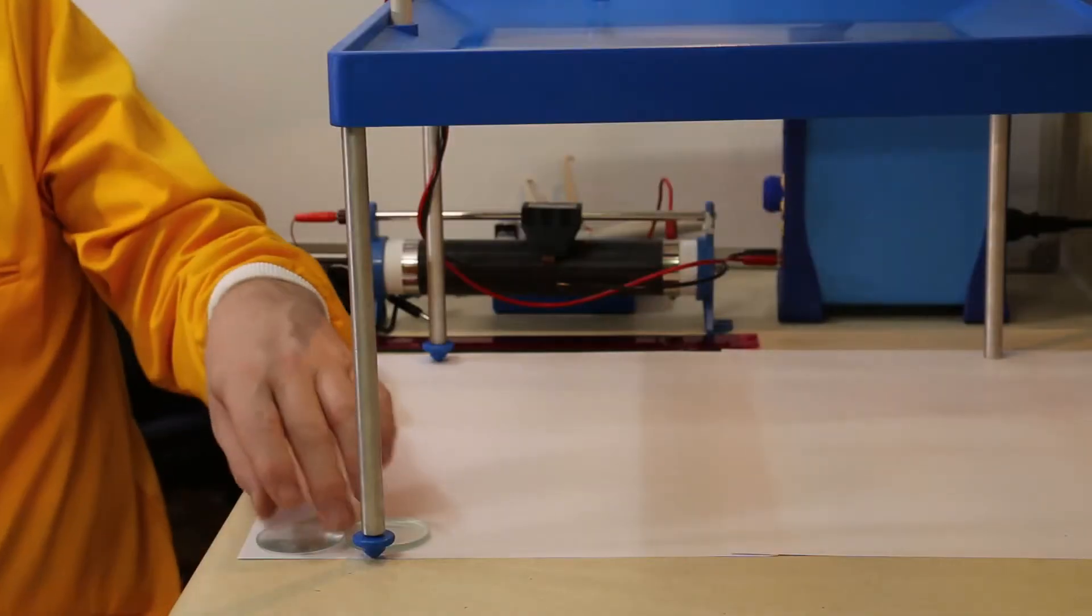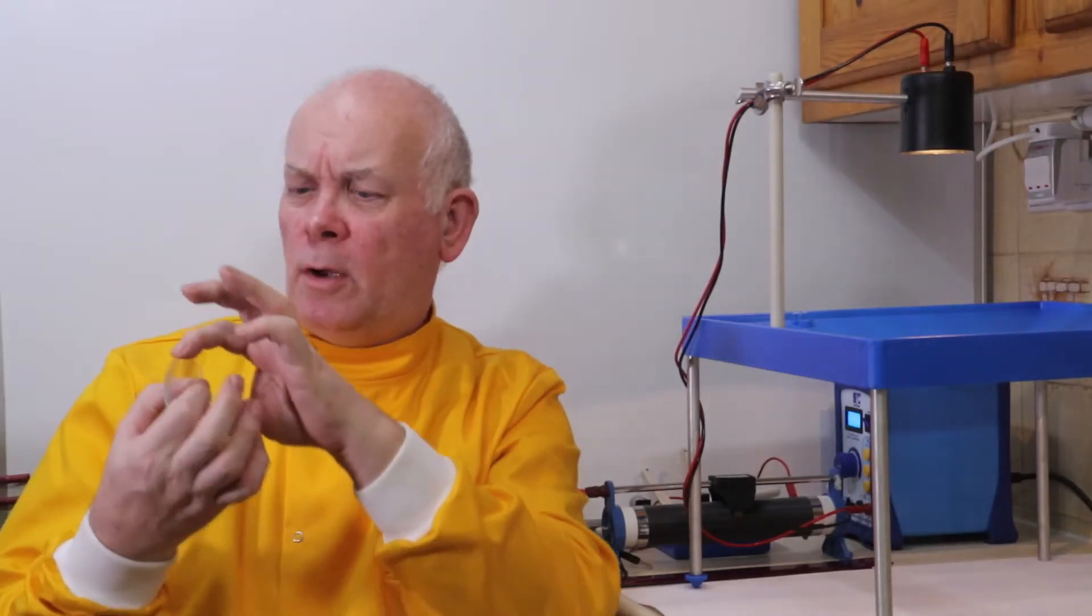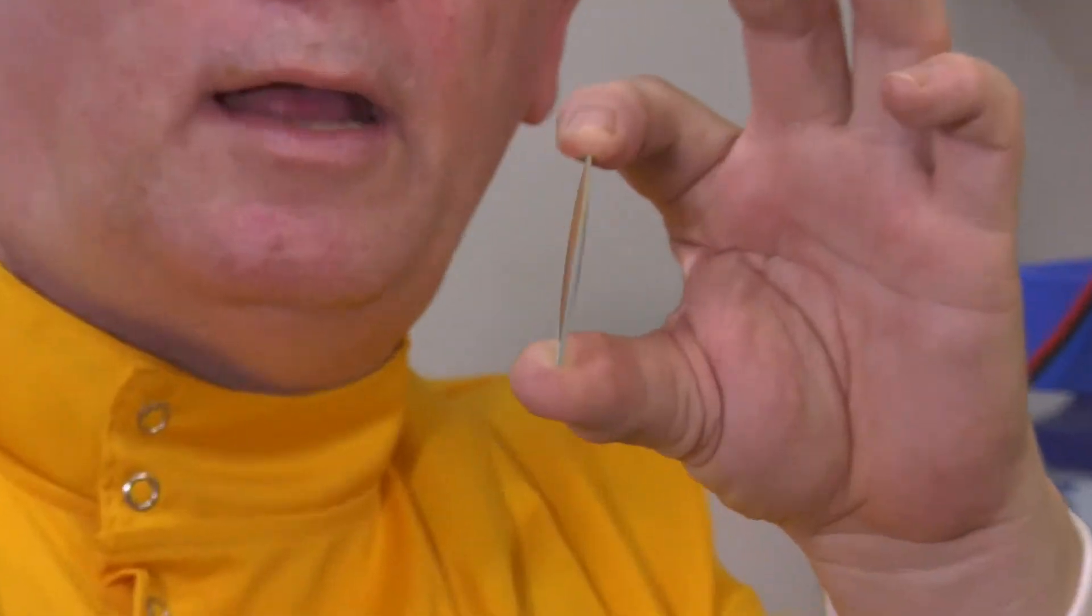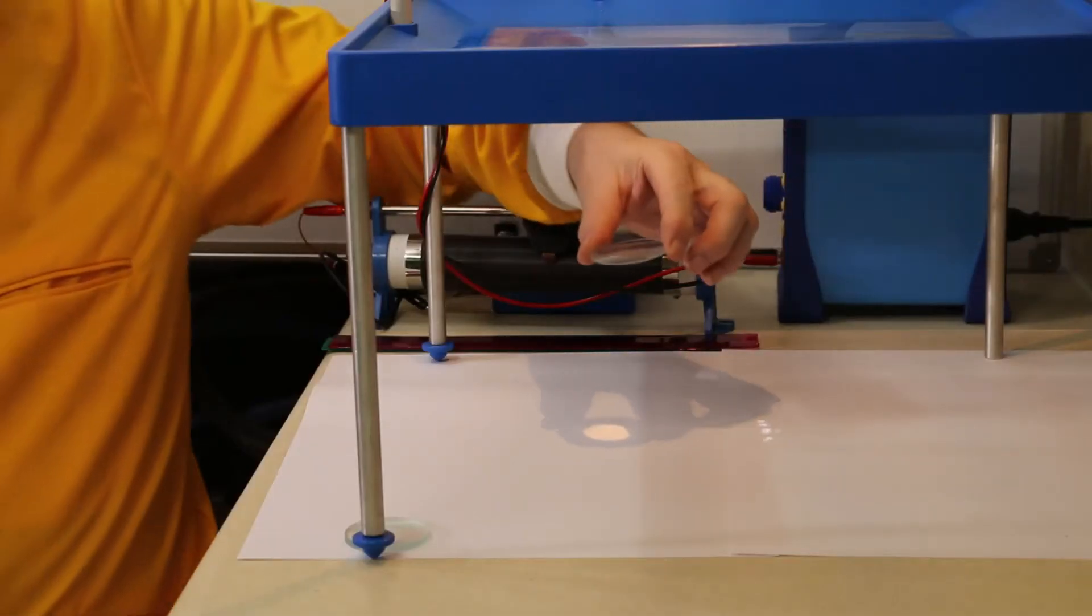...using a lens. I have two lenses here. The first of these is a convex lens which is thicker at the center and thinner on the outside. If we look at this with the light shining on it...